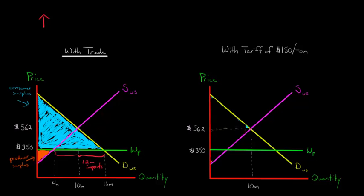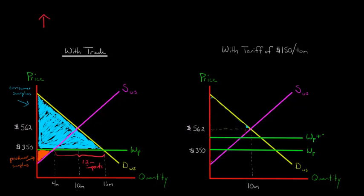Let's say there's an import tariff of $150 a ton on steel. What that is effectively going to do is raise the cost of steel in the US. Instead of getting it at the world price of $350 a ton, now it's going to be $500 — shown here in green as the world price plus the tariff. So if someone in the US wanted to buy steel on the world market, it's not only going to cost $350, but now with the $150 import tariff, the real price is $500 a ton.